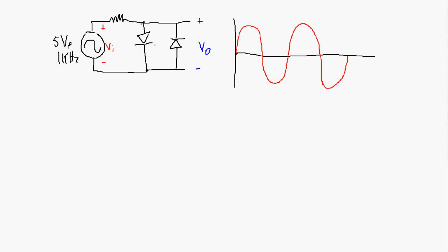This next circuit adds a second diode in the opposite orientation to the first. When one diode is forward biased, the other is sure to be reverse biased. Starting at zero volts, both diodes are reverse biased with no current flowing. As the voltage increases above 0.7 volts, the first diode becomes forward biased and maintains approximately 0.7 volts. It stays forward biased until the input signal drops back below 0.7 volts, at which point the diode is again reverse biased.